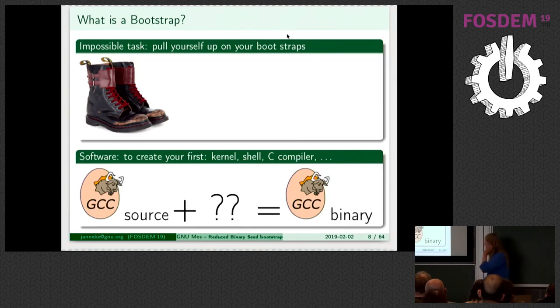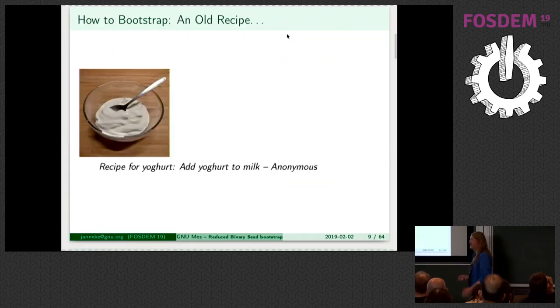To bootstrap yourself is actually to pull yourself up using your bootstraps. Traditionally, it's an impossible task. So, what does it mean to bootstrap in programming, say, a compiler or a kernel? You take the source of a program, you add something, and then you get the binary that you can run. The thing is, this is something, what do we do?